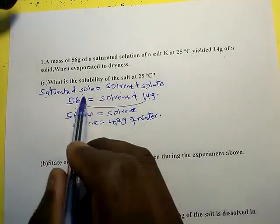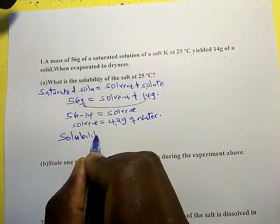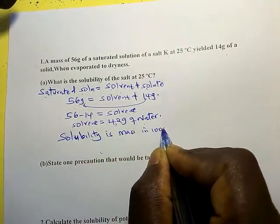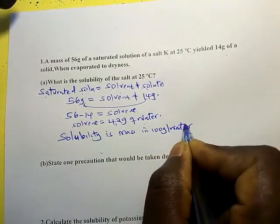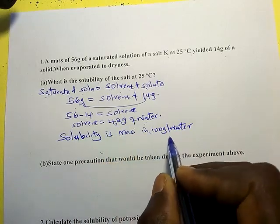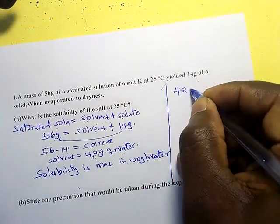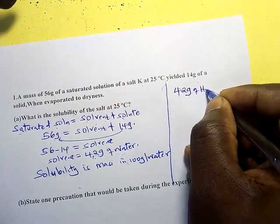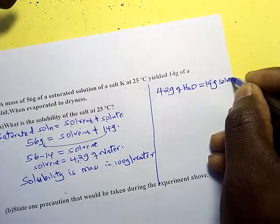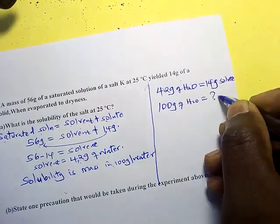Now the question is: what is the solubility? Solubility is defined as the mass of solute that dissolves in 100 grams of water. We have a certain mass in 42 grams, so we ask: what mass of solute dissolves in 100 grams of water? That is the solubility.